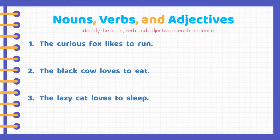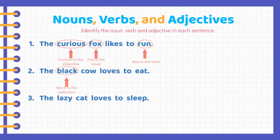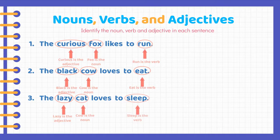Identify the noun, verb, and adjective in each sentence. In our first example, curious would be the adjective, fox would be the noun, and run would be the verb. In our second example, black would be the adjective, cow would be the noun, and eat would be the noun. In our third example, lazy would be the adjective, cat would be the noun, and sleep would be the verb.